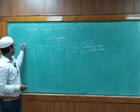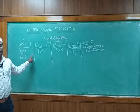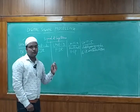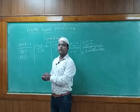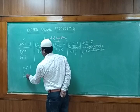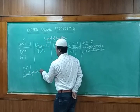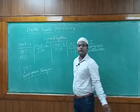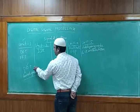In Unit 1 we are going to learn DFT and FFT. DFT stands for Discrete Fourier Transform, and FFT stands for Fast Fourier Transform. These techniques are used for signal conversion. In DFT, we discuss how when you have a discrete signal X of N, you convert it into X of K.